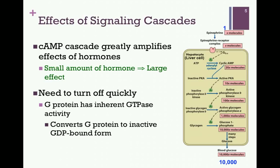Let's assume that each of those molecules can activate 10 molecules of phosphorylase kinase, so then we have 100 molecules of active phosphorylase kinase. Each of those molecules of phosphorylase kinase, let's assume, can activate 10 molecules of glycogen phosphorylase — now we have 1,000 molecules of active glycogen phosphorylase. And let's assume that each of those enzymes can stimulate the release of 10 molecules of glucose 1-phosphate to give us 10 molecules of glucose. So the downstream effect of one molecule of epinephrine binding to its receptor is that we've released 10,000 molecules of glucose into the bloodstream.